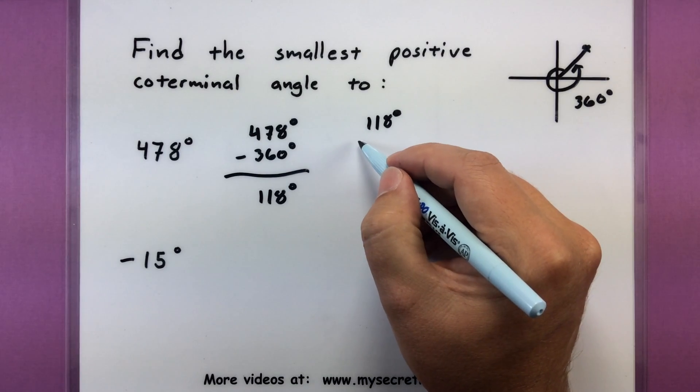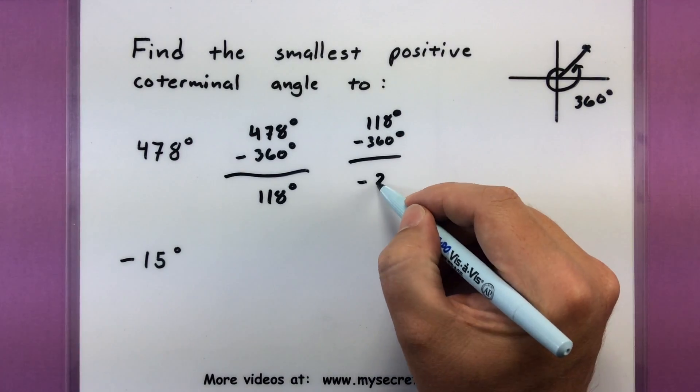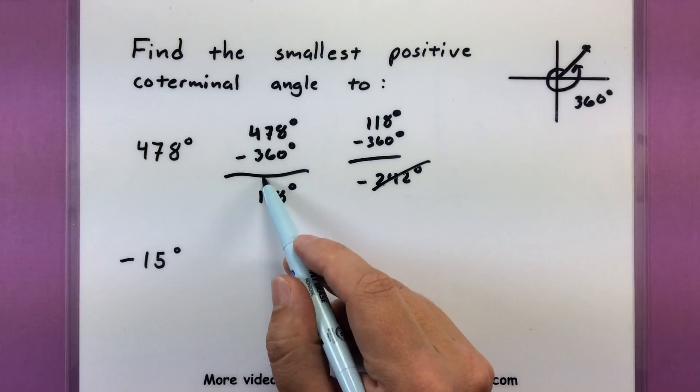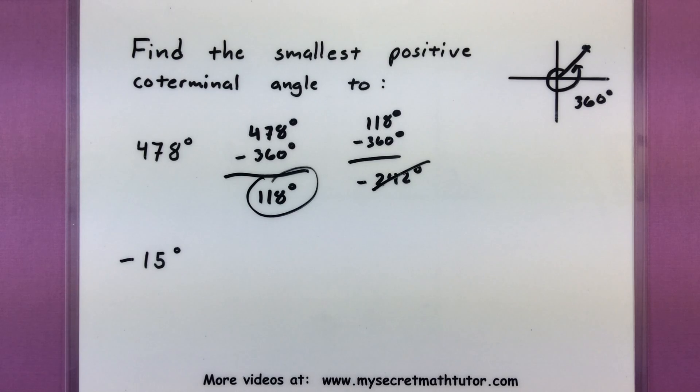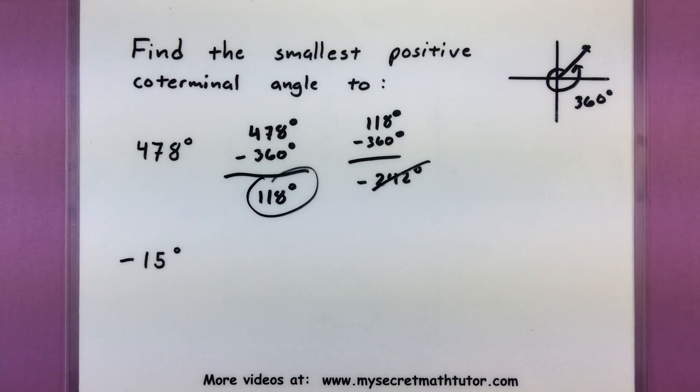Now if I take 118 and subtract another 360 degrees, this will give me negative 242 degrees, which is nice, but unfortunately it's not positive anymore, so I'm going to not worry about that one. I'm going to keep this one as the smallest positive coterminal angle to 478, and again visually they stop in the same place. Let's move on.